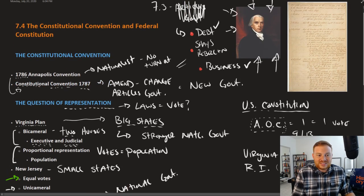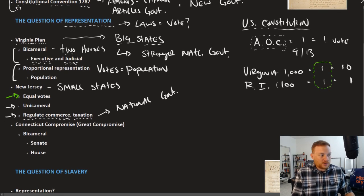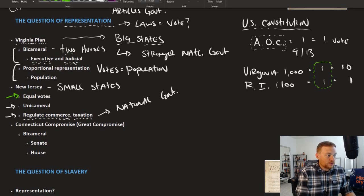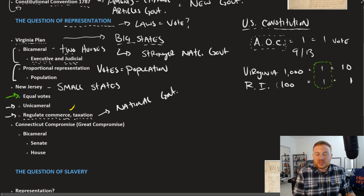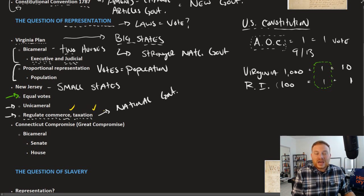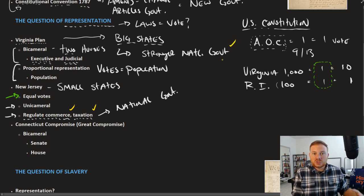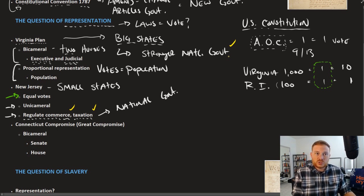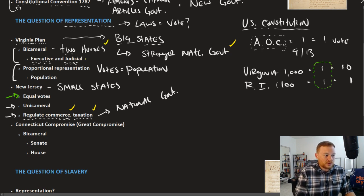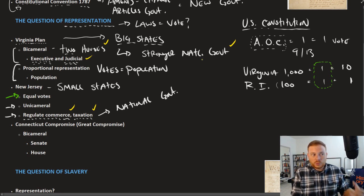When it came to actually agreeing upon things, they came down on giving the national government the power to regulate commerce and the ability to tax. They agreed on creating a stronger national government — strong enough to work, but not strong enough to take away people's rights. So they agreed to create two houses and the two additional branches.